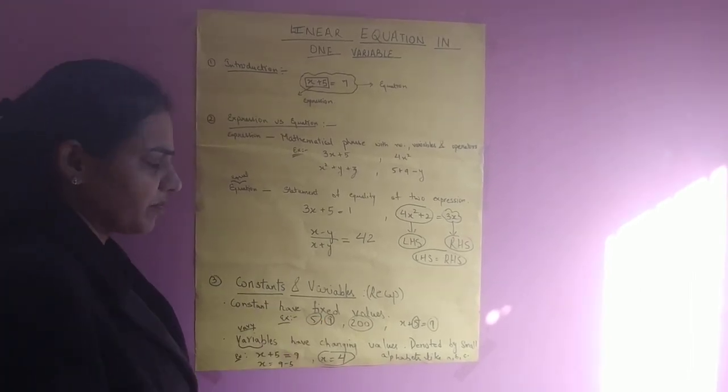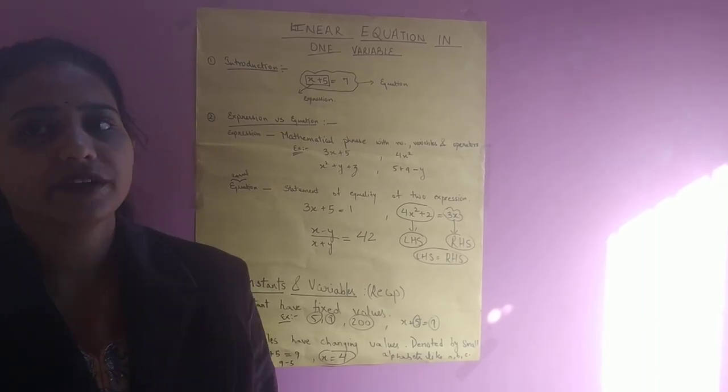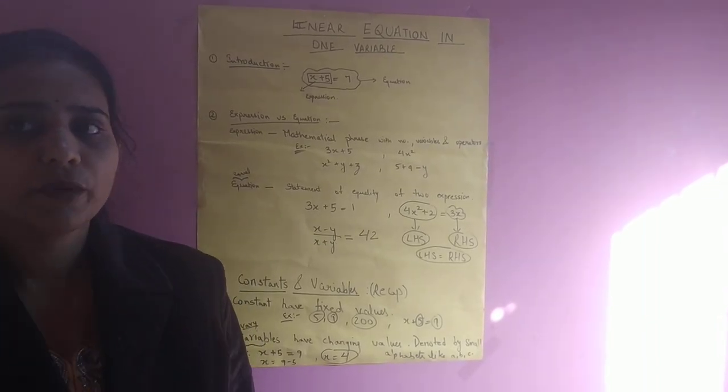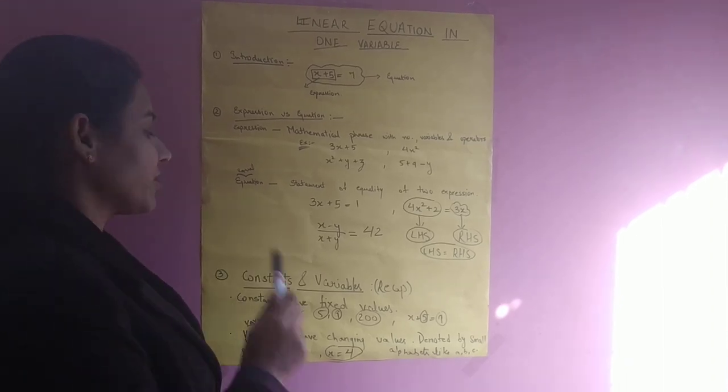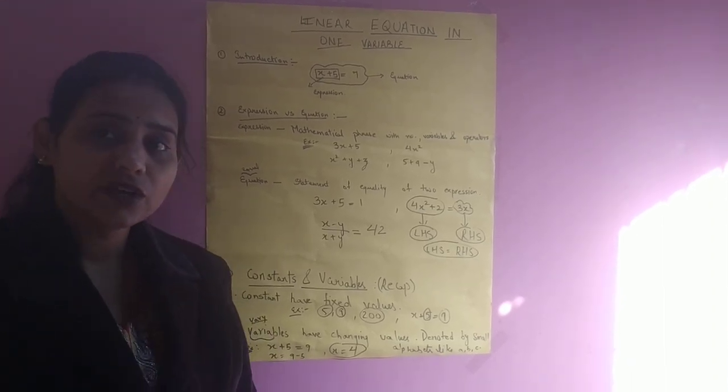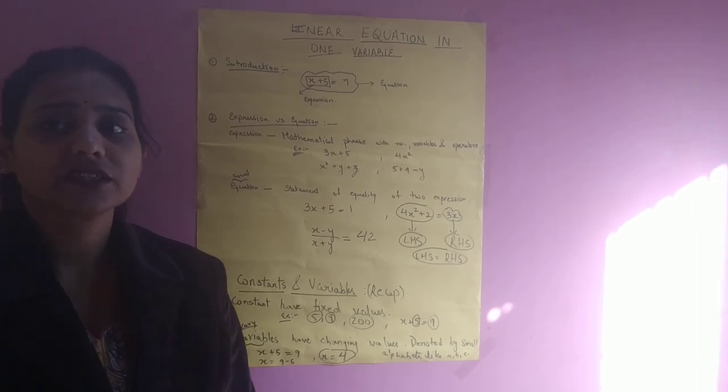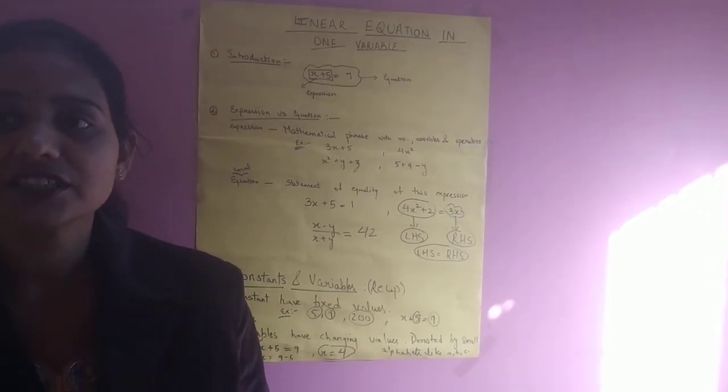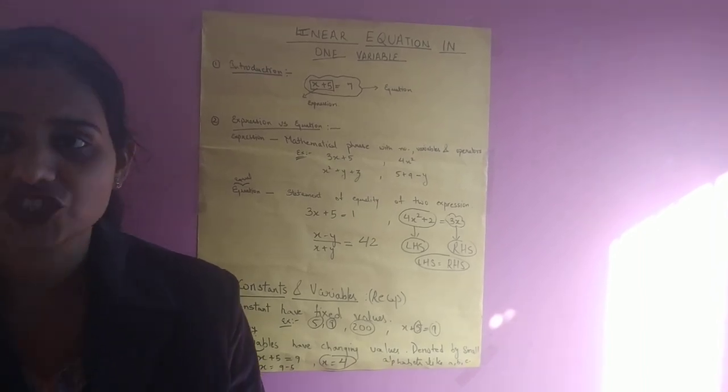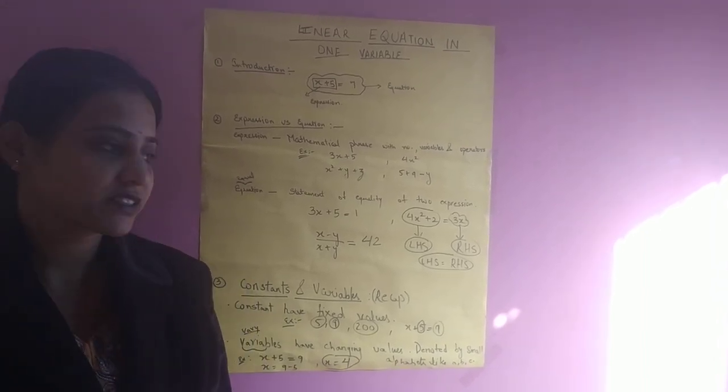Constants and variables. You have studied this topic in your previous classes also, but we will discuss here a little bit. What are constants? Constants are known as which have fixed values. Their values can't vary or can't change. They are known as the constant.